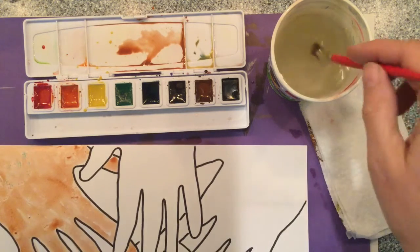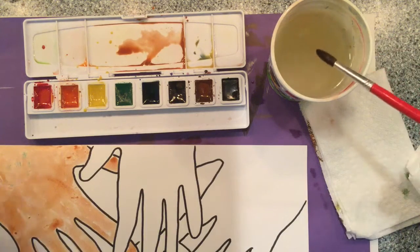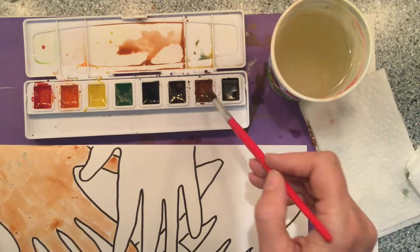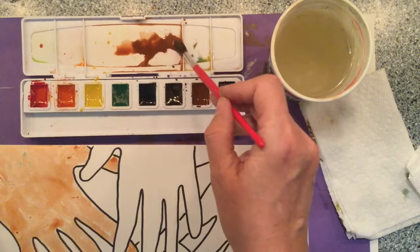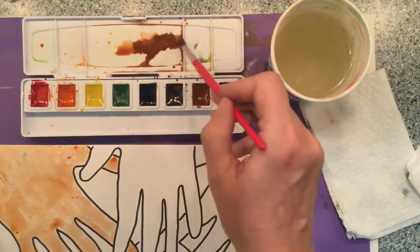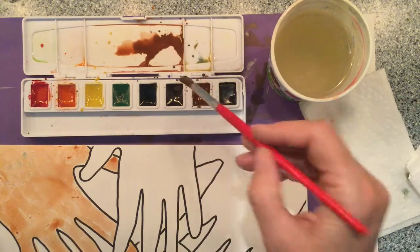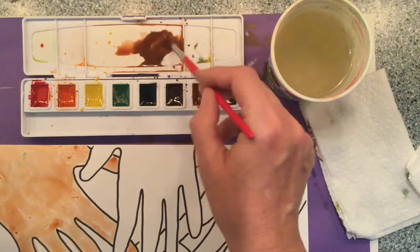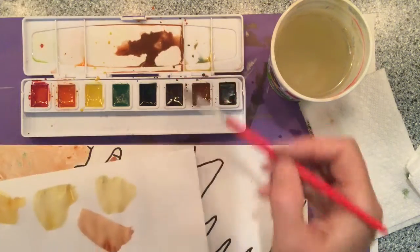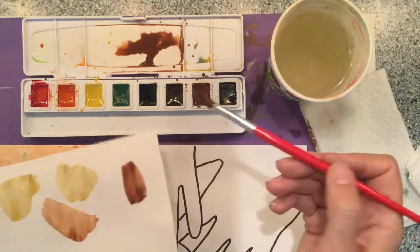Now I'm going to do another darker brown this time. I'm going to start with a dark brown right out of the palette. Now strangely, I just want to make a little darker, but instead of using black I'm going to use a little purple. Let's see how that looks. There's a rich brown.